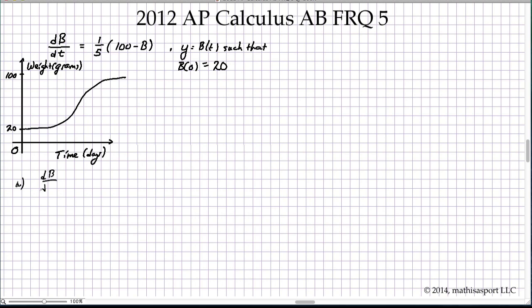So dB/dt when B equals 40 and dB/dt when B equals 70. But we have the formula there, it's just one-fifth of 100 minus 40 in the one case and one-fifth of 100 minus 70 in the other.